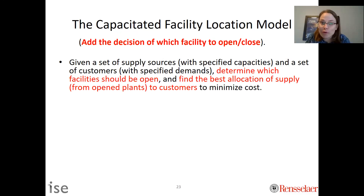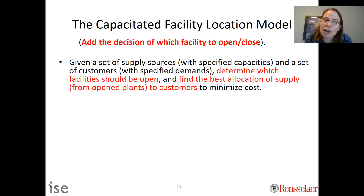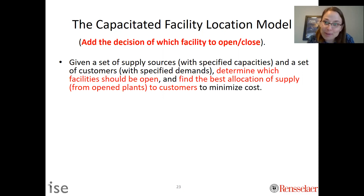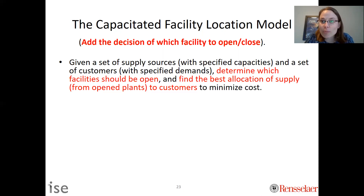More formally, given a set of supply sources with specified capacities and a set of customers with specified demands, we need to determine which facilities should be open and the best allocation of supply from open plants to customers that minimizes cost. This is very similar to the demand allocation model except we have an additional decision: should I open a facility or leave it closed, and if I open it, how should I allocate my resources?